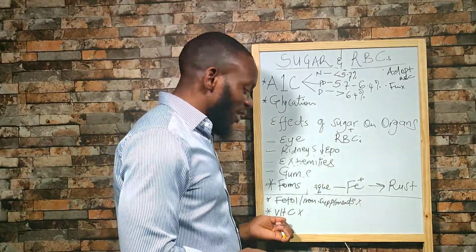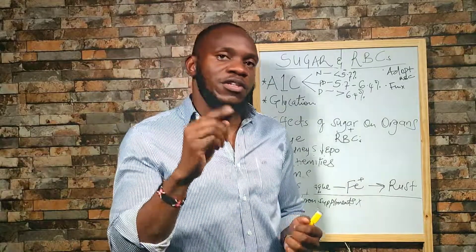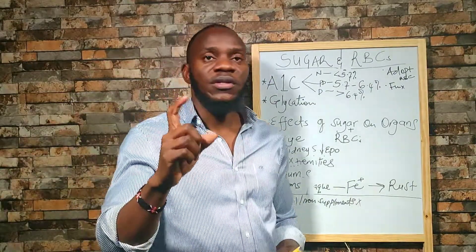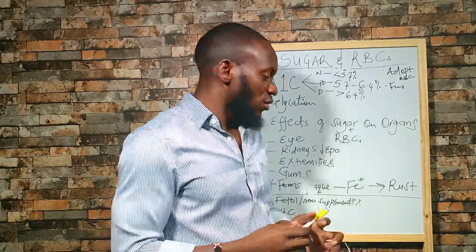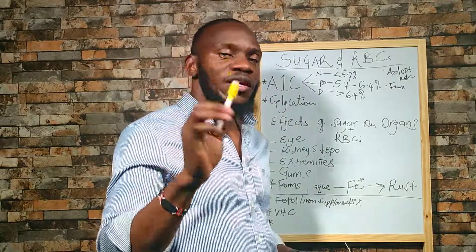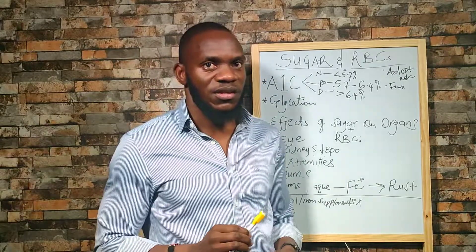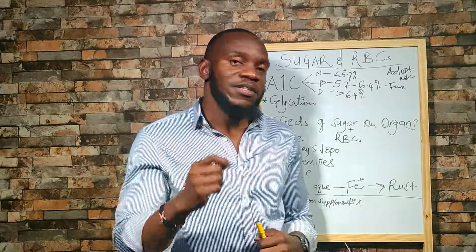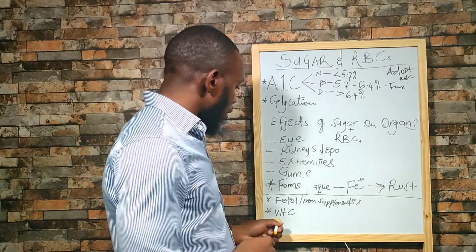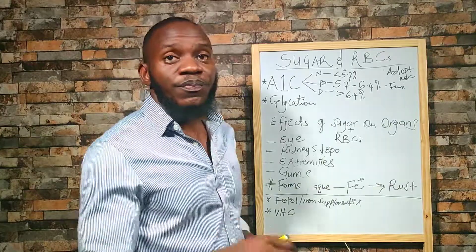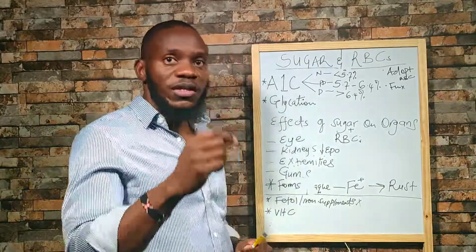Finally, vitamin C cannot be absorbed in the presence of sugar. The body prefers sugar over vitamin C, and since vitamin C plays a huge role in immunity, if you take sugar and vitamin C together, the body will choose sugar and there will be no absorption of vitamin C. That's the end of the video — see you in the next one.